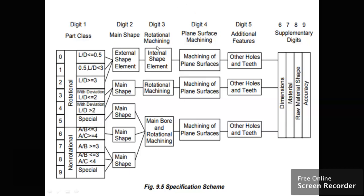Digit 3 is for rotational machining or surface machining. Finally, you have additional features. The supplementary digits include dimensions, materials, raw material shape, and accuracy.